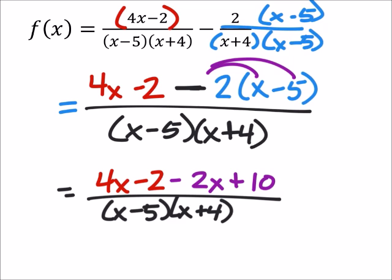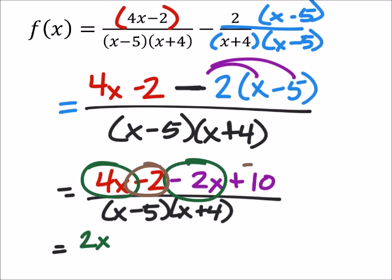Yes, so now we're just looking to combine like terms. And that may simplify the problem completely. We're going to find out in a second. So let's look at the x's first. I've got a 4x minus 2x, which is 2x. And then I've got a negative 2 plus 10, which would be a positive 8. And the denominator we didn't do anything to.